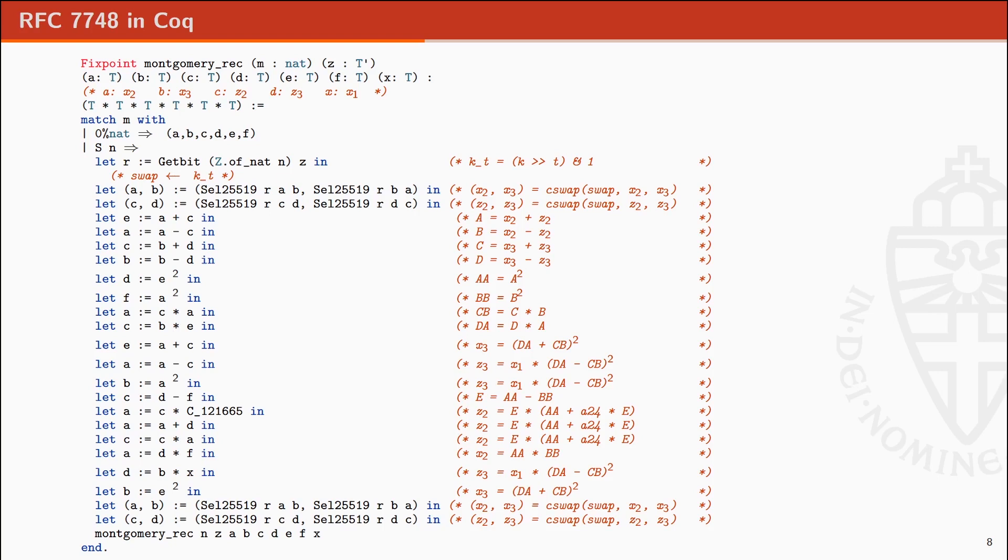Here, we see the Coq code of the Montgomery ladder. The commands in Coq are written between brace stars. The code from RFC 7748 is provided here in the comments and matches directly the formalization on the left.